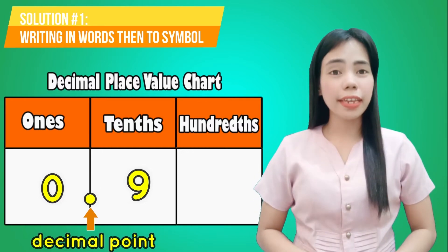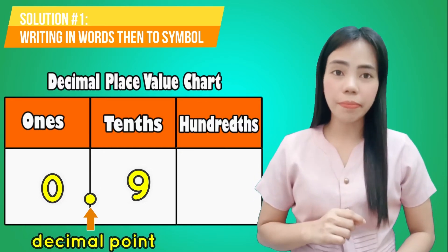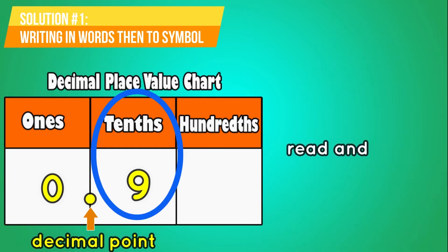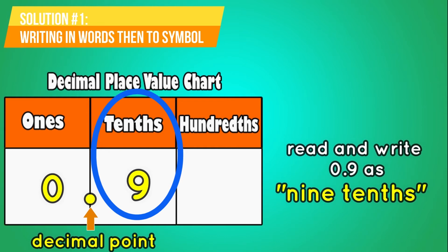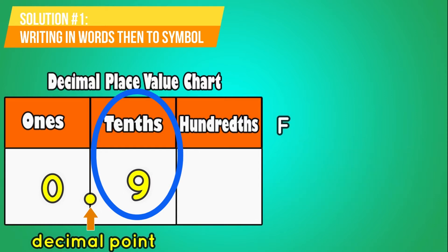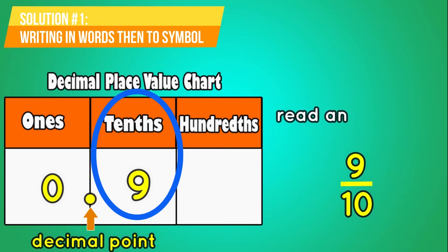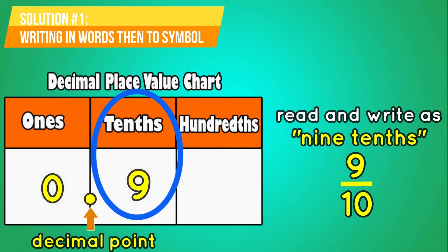Let's think — what place does the decimal end? 9 is in the tenths place. Therefore, read and write 0.9 as 9 tenths. In fraction form, 9 will be the numerator and 10 as the denominator. So we have 9 over 10. 9 over 10 is read and written as 9 tenths.